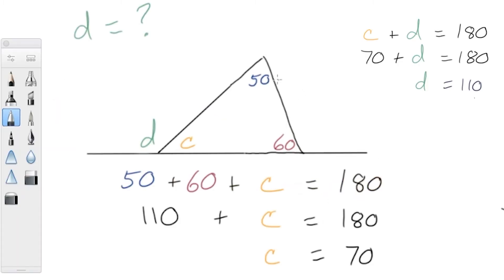Now notice also here that 50 and 60 is also 110 degrees. So that means that this angle here, our exterior angle, is also equal to the sum of these two angles, the sum of the opposite two interior angles of the triangle. And these two opposite angles are sometimes called remote interior angles. As in remote, they're the farthest ones from the exterior angle, and they are interior.